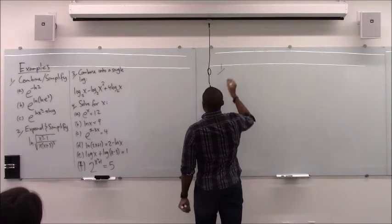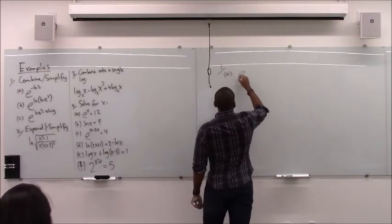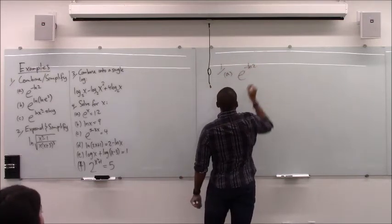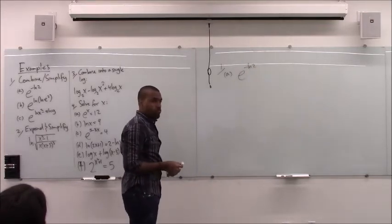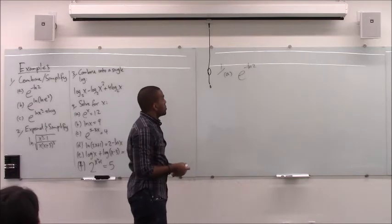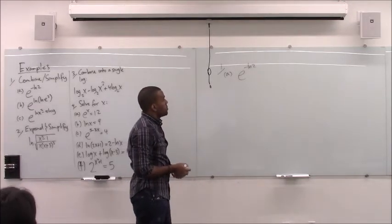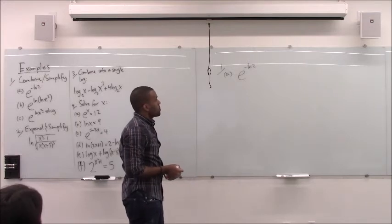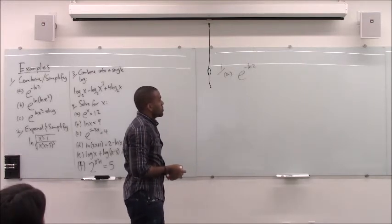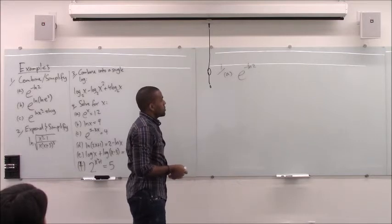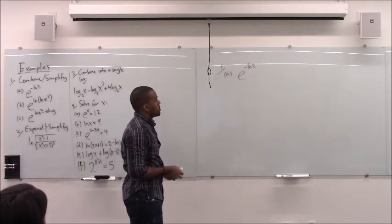Let's move on to problem one, part a: e to the minus ln of 2. What's that equal to? A student answered one half. The e to the natural log canceled, and then the negative 2 exponent becomes the one half.